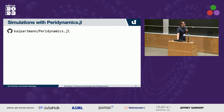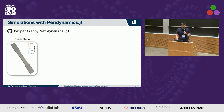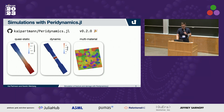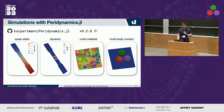With our Julia package Peridynamics.jl, you can use that to make simulations. We have a few features. First, you can use quasi-static simulations - very basic simulations with the dynamic relaxation algorithm. Then, of course, the main thing: dynamic simulations where you can have fracture and damage. With the new version 0.2, you can also have multi-material simulations where each material point has different material properties. And, of course, the logo - you can have multi-body contact simulations.